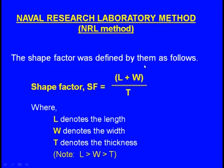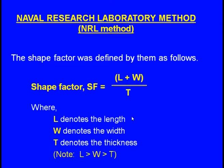What is this shape factor? The shape factor, abbreviated as SF, is equal to (L + W) divided by T, where L denotes the length of the section to be fed, W denotes the width, and T denotes the thickness. The condition is L should be greater than W and W should be greater than T. This is how Bishop and his team developed the shape factor in the Naval Research Laboratory method.